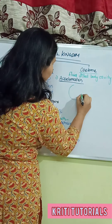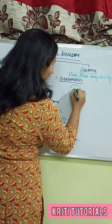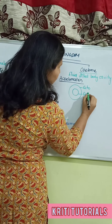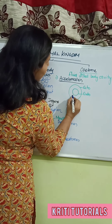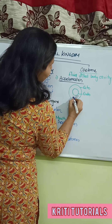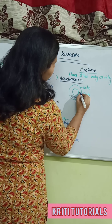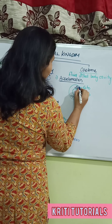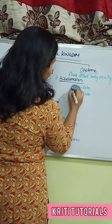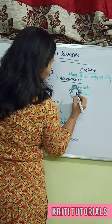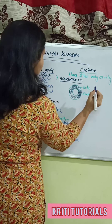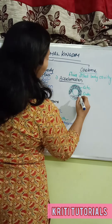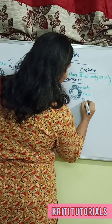In the acoelomate diagram, the outer ectoderm is present, the inner endoderm is present, but the middle mesoderm is not present. It is packed with a tuft of parenchyma cells. Such species are called acoelomates, and we can take the example of flatworms.